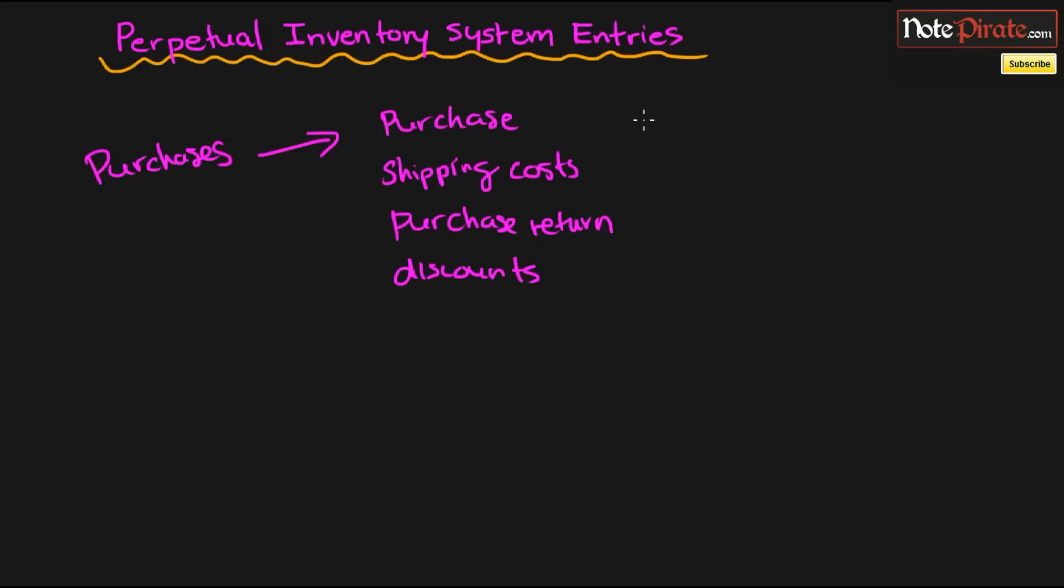What we're actually going to see in common with all of these different transactions is a Perpetual Inventory System account which is frequently used called Merchandise Inventory. This account is going to come up in all four of these transactions, and this account is only a Perpetual Inventory System account. So make sure you remember that. And let's start off with purchases.